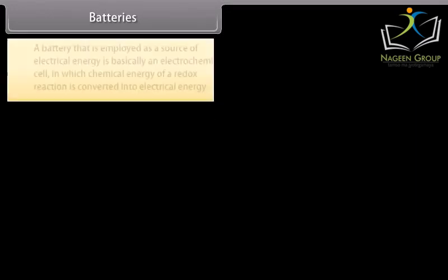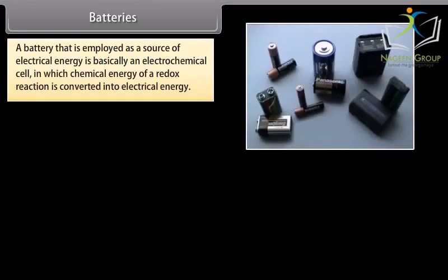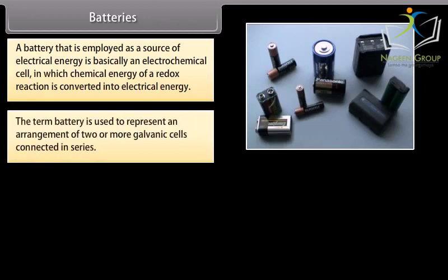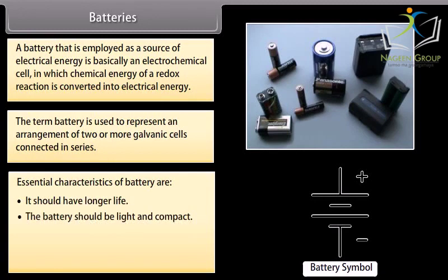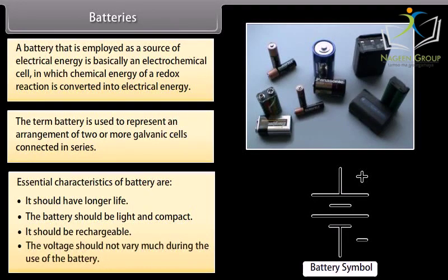Batteries. A battery that is employed as a source of electrical energy is basically an electrochemical cell in which chemical energy of a redox reaction is converted into electrical energy. The term battery is used to represent an arrangement of two or more galvanic cells connected in series. Essential characteristics of battery are: It should have longer life. The battery should be light and compact. It should be rechargeable. And the voltage should not vary much during the use of the battery.